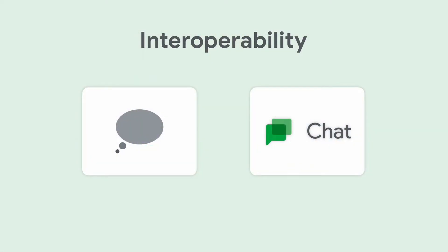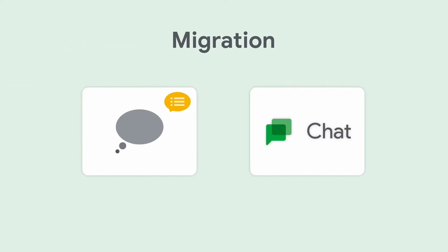How might this be useful? Let's have a look at three common scenarios where the Google Chat API will prove to be helpful. Some organizations use more than one messaging solution and they need a way for these messengers to coexist. The Chat API enables interoperability between Google Chat and any other messenger that has an API. When an organization adopts Google Chat, they usually need a way to migrate the information located on the previous messenger. The Chat API allows you to programmatically recreate the channels and memberships and bring historical conversations into Google Chat.